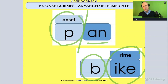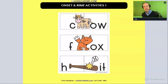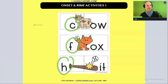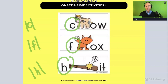This activity can be a little advanced because when we do onset and rhyme with words like 'cow,' 'fox,' 'hit,' when I identify the initial sound before the vowel, we're actually isolating a phoneme. If I say 'cuh' in cow, 'fuh' in fox, 'huh' in hit — I'm isolating that phoneme.